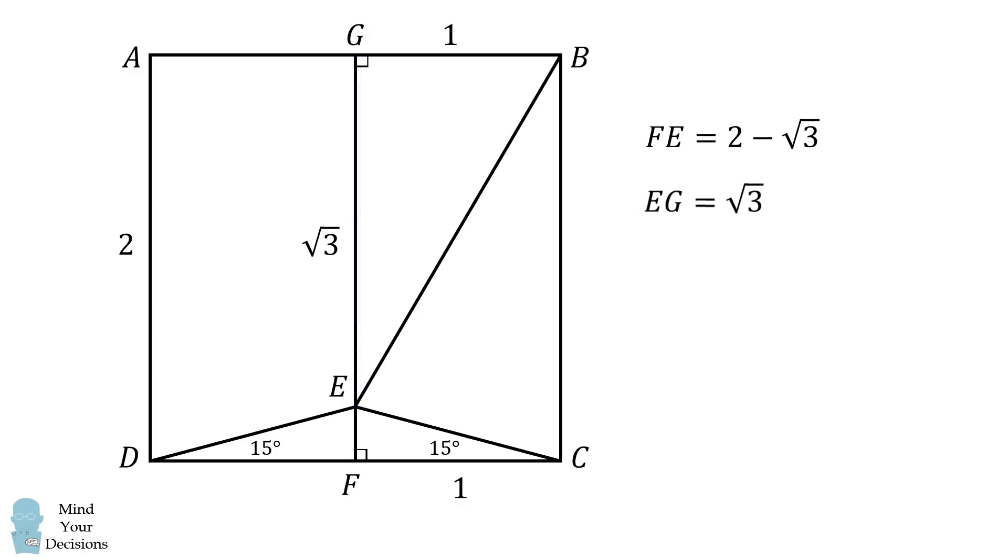From here, we will use trigonometry again. Consider angle EBG. We know that it's equal to the inverse tangent of the square root of 3, which is equal to 60 degrees. Then, angle B is a right angle. Therefore, angle EBC must be equal to 30 degrees. And that's our answer.